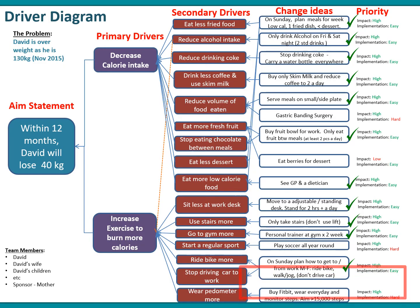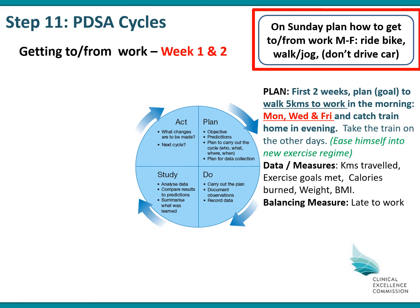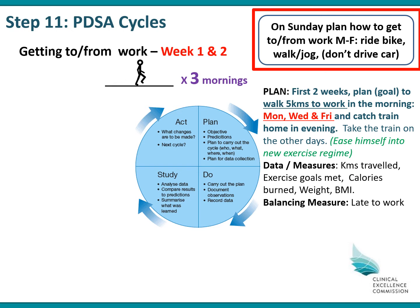Getting back to David's driver diagram, we're going to test one of his change ideas — how he gets to work through the week — because it's high impact, easy to do, and has two relationship arrows to the secondary drivers. So in weeks one and two, the plan is that David is going to walk to work on Monday, Wednesday and Friday and catch the train home in the evening, easing himself into a new exercise regime — not going in hard and fast trying to do marathons in the first week. The data he's going to collect includes kilometres travelled to work, exercise goals met, calories burnt, his weight, and his BMI. As a balancing measure, he might measure how often he's late to work or how often the weather prevents him from doing this exercise regime.